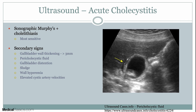You can also have pericholecystic fluid as a secondary sign — essentially fluid around the gallbladder. Right here is our pericholecystic fluid; it can be linear, or sometimes triangular, essentially adjacent to the gallbladder. This is different from ascites or perihepatic fluid, which you'd see adjacent to the liver.